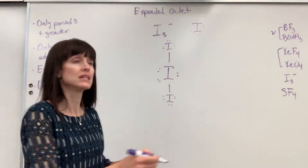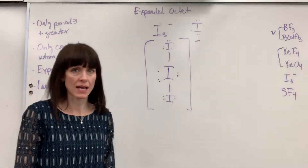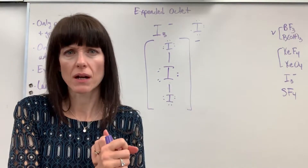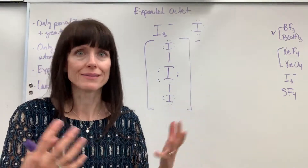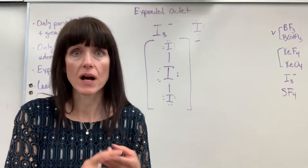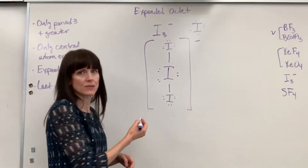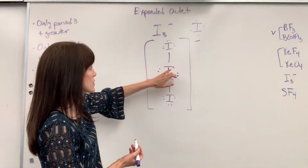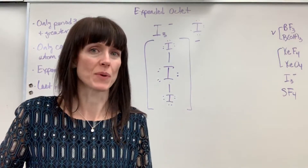A little reminder: this is an ion, so we put the whole thing in brackets with a minus sign. Going through the steps: can I do a regular octet? No. Can I do a coordinate covalent bond? No — it would give the iodine nine electrons. So I expand the octet. Give the substituents what they need, work out the central atom — it expanded to ten. Perfect.